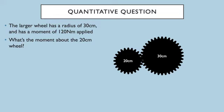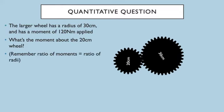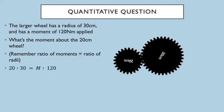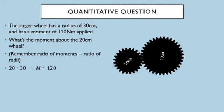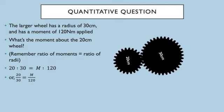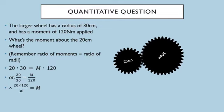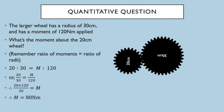Okay, let's have another look at this one. We've got a bit of a question here. The larger wheel has a radius of 30 centimeters and has a moment of 120 Newton meters applied. What's the moment about the 20 centimeter wheel? Remember that the ratio of the moments equals the ratio of the radii. So the ratio of the moments—we can go from 20 to 30, that's the ratio of the radii. That's the small wheel's moment over the large wheel's moment, so we can write 20 over 30 equals M over 120. That would be 20 times 120 all divided by 30, so the moment would be 80 Newton meters.